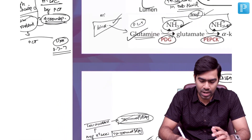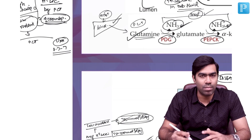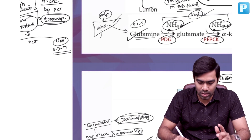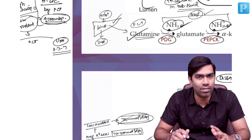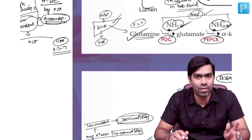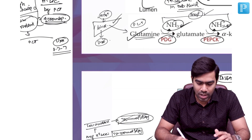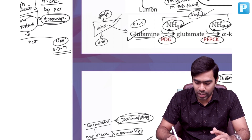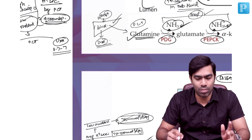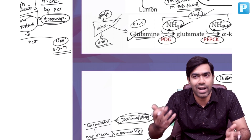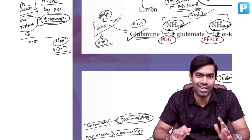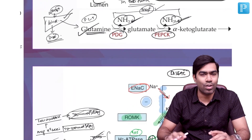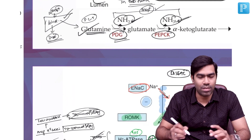Ammonium handling by the liver occurs through two mechanisms: first, producing glutamine, which is a non-toxic molecule; and second, producing urea, which is also relatively non-toxic at physiological levels. Both glutamine and urea are ultimately handled by the kidneys. Ammonium production in the PCT involves two key enzymes.